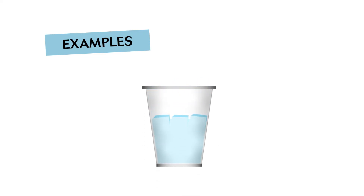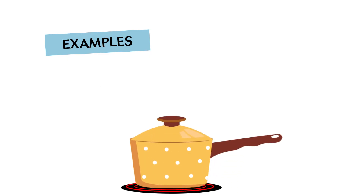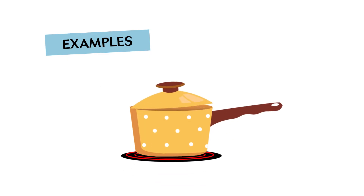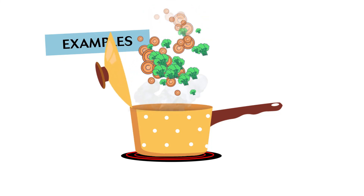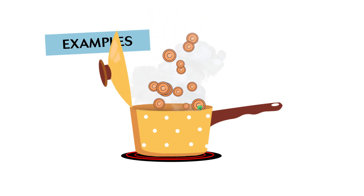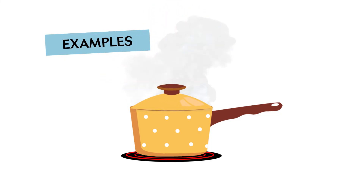Melting ice: when ice melts, it absorbs latent heat from its surroundings. This is why ice cubes can cool drinks down. Boiling water: when water boils, it absorbs latent heat from its surroundings. This is why boiling water can cook food.